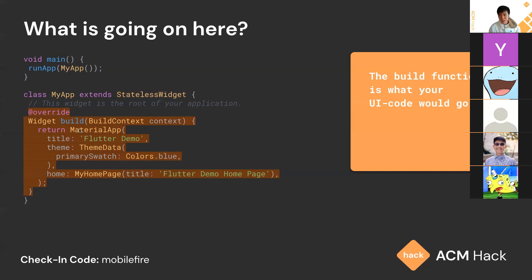The build function is where your UI code goes. Stateless widget has a build function that we essentially override, and it returns another widget we want to display. In this case, the MaterialApp widget is a wrapper that wraps around the entire app, and we give it the MyHomePage widget, theme data, and a title.